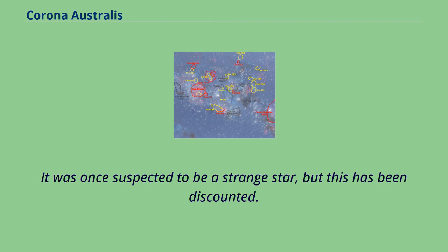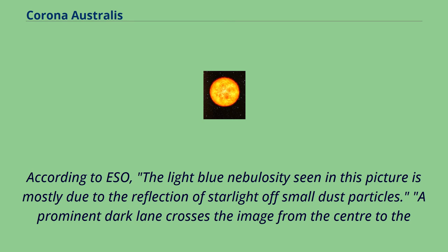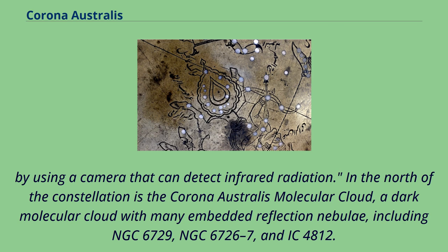The R Corona Australis region imaged with the wide field imager at ESO's La Silla Observatory. According to ESO, the light blue nebulosity seen in this picture is mostly due to the reflection of starlight off small dust particles. A prominent dark lane crosses the image from the center to the bottom left, where the visible light emitted by the forming stars is completely absorbed by the dust. These objects could only be detected by observing at longer wavelengths using a camera that can detect infrared radiation.